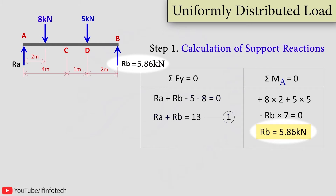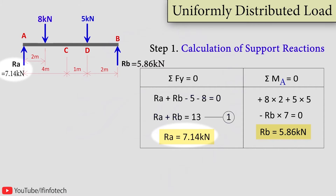Putting this value of Rb in equation number 1, I get the value of Ra as 7.14 kN. So I have calculated values of support reaction: Ra as 7.14 kN and Rb as 5.86 kN.